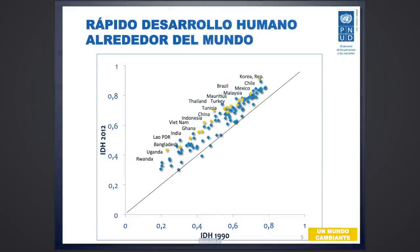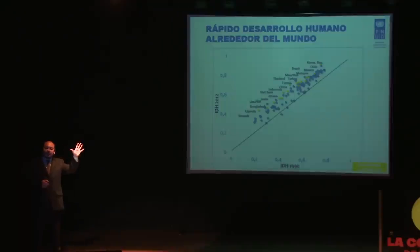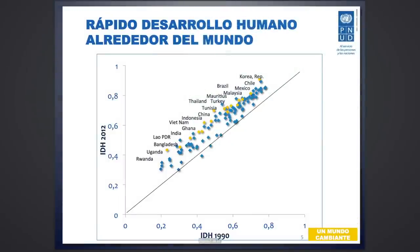Veamos qué está pasando en el mundo. El último informe del 2013 de desarrollo humano a nivel mundial habla de que hay cambios tectónicos en el mundo, es decir, cambios radicales. Incluso la tapa del informe muestra al sur como en el norte y al norte como en el sur. Hay como 40 países que han dado saltos importantes a nivel de desarrollo humano cuando uno mide 1990 versus 2012.